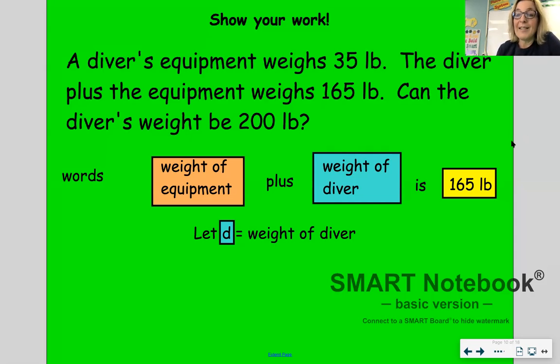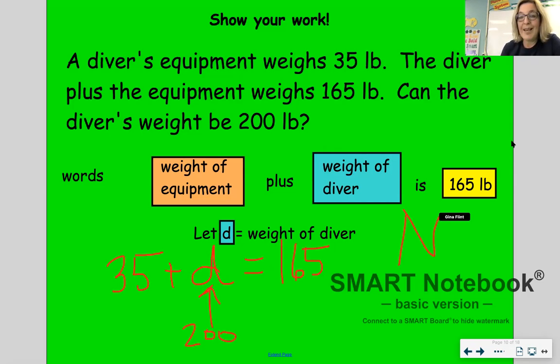So let's think about putting this into an equation and then seeing if the solution makes sense. So a diver's equipment is 35 pounds. So 35 pounds plus we're going to let D represent the weight of the diver has to equal 165. Right? Because the diver plus the weight of the equipment is 165 pounds. So could D be 200? Well, 135 plus 200 is not 165. So the answer to that question would be no.